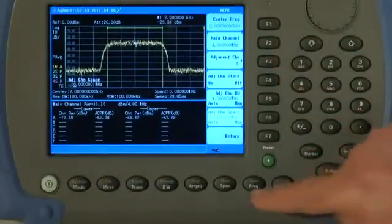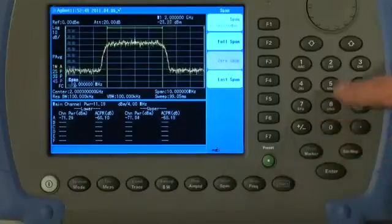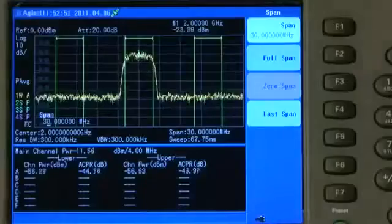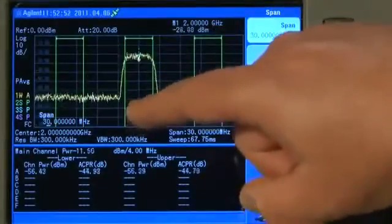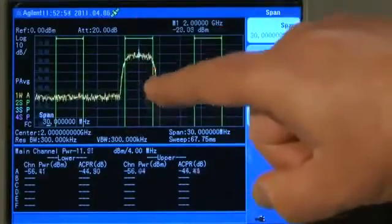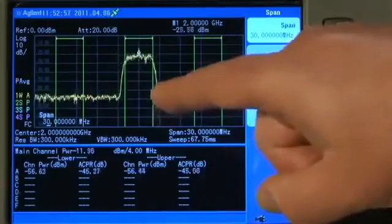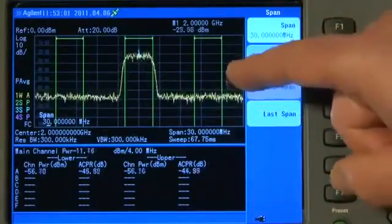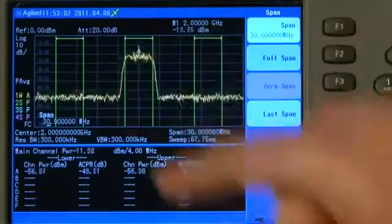And we will just widen the span a bit. If I press span, and let us go out to say 30 MHz. You will see now that as well as measuring the channel power in our main channel, the intended frequency of transmission, we are also measuring the adjacent channel power in these two adjacent channels.